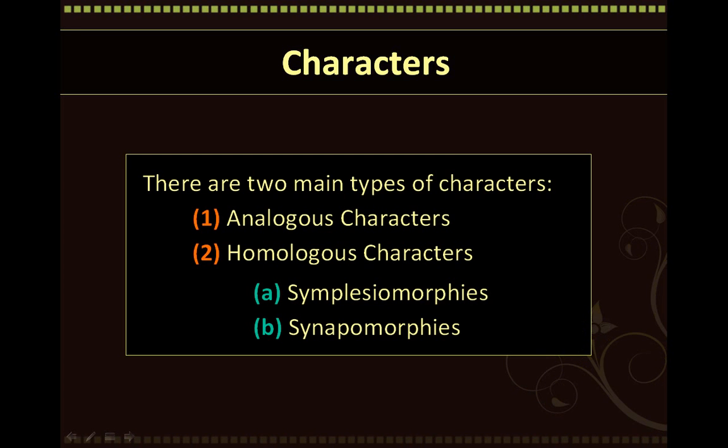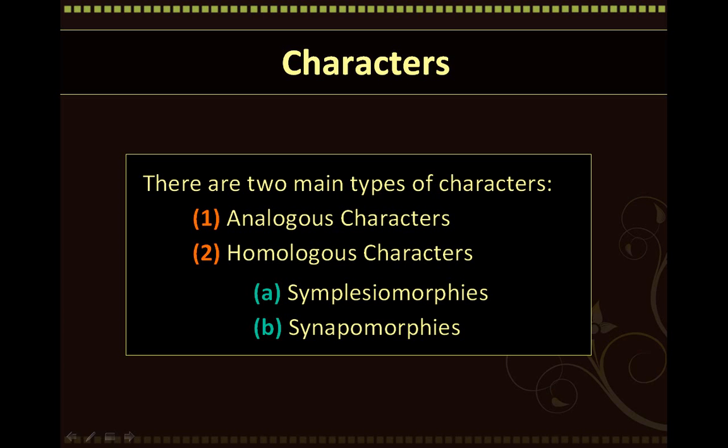Now that we have determined the three types of groupings possible in phylogenetic analysis — which are monophyletic, paraphyletic, and polyphyletic — let's discuss the types of characters or characteristics of the organisms themselves. There are two main types of characters: analogous characters and homologous characters. Homologous characters can be further subdivided into simplesiomorphies and synapomorphies.